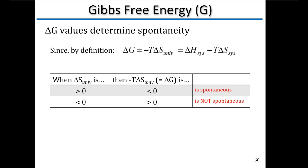What's important about delta G is that this value determines spontaneity. By definition, delta G equals minus T delta S of the universe, which equals delta H of the system minus T delta S of the system. When delta S of the universe is greater than zero, then delta G — which is minus T delta S of the universe — will be less than zero: that's a spontaneous process. If delta S of the universe is less than zero and delta G is greater than zero, that's not a spontaneous process.